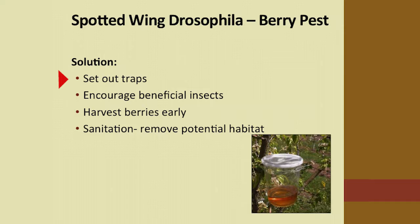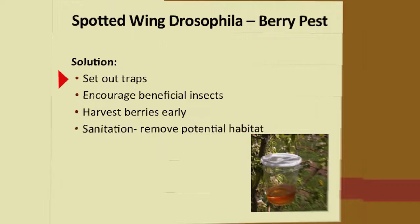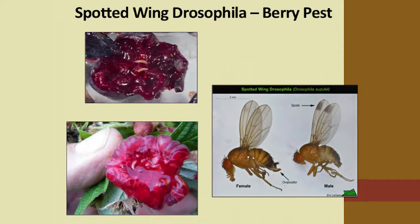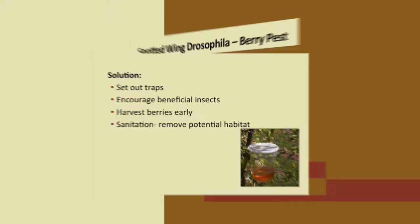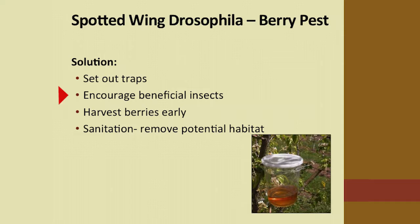They're called Spotted Wing Drosophila because the males have spots on top of their wings. The female doesn't have the spot but has a special saw-like ovipositor she uses to cut into berries before they're even ripe. Encourage beneficial insects and birds — swallow nests near your berries are helpful since swallows eat a lot of flying insects. Berries harvested early in the season have less trouble; your later-season crops will have more. There are several generations of these flies all summer long, so harvest your early berries as soon as you can. Sanitation is really important so they don't overwinter in leaf litter under your plants.